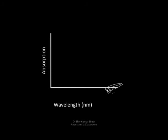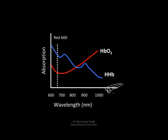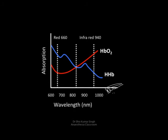For exam purposes, you should be able to draw this graph: x-axis is wavelength in nanometers, absorption on the y-axis. Put down values at 600, 700, 800, and 1000 nanometers. Oxygenated hemoglobin forms a relatively flat curve, while deoxygenated hemoglobin has hills and valleys. Draw a line at 660 nanometers — the red range — where maximum absorption of deoxygenated hemoglobin occurs, and a line at 940 nanometers where oxygenated hemoglobin is absorbed. The point where both absorptions are equal is known as the isobestic point, around 800 nanometers.